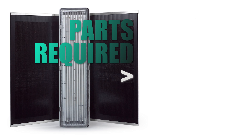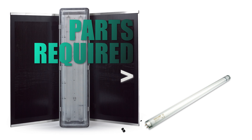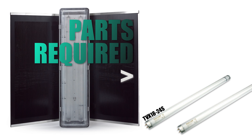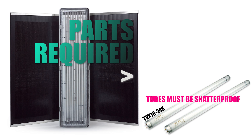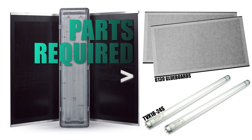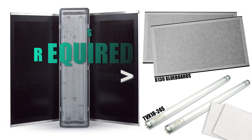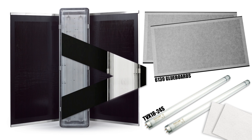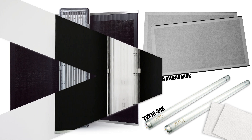To carry out a full service on the EX55 ATEX unit, you will need: two replacement shatterproof tubes, part code TVX18-24S; two replacement glue boards, part code 6139; some cloth to wipe off any dirt or debris; and hand wipes to remove any contamination on the seal. No tools should be required.